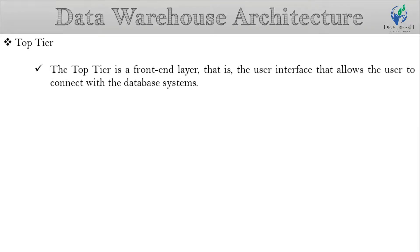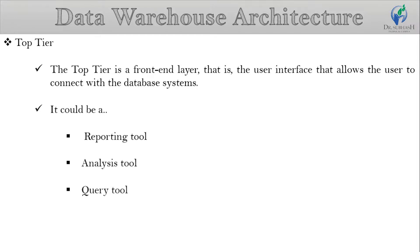The top tier is the front-end layer, which is the user interface that allows users to connect with the database systems. This user interface is usually a tool or API call which is used to fetch the required data for reporting, analysis, and data mining processes. The type of tool depends purely on the form of outcome expected. It includes reporting tools, analysis tools, query tools, and data mining tools. It is essential that the top tier should be uncomplicated in terms of usability, as only user-friendly tools can give effective outcomes.